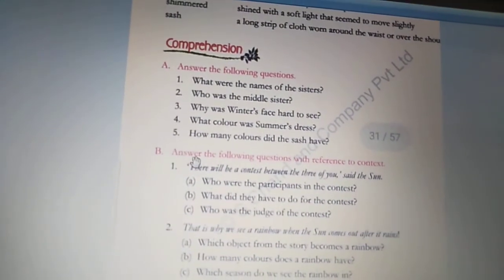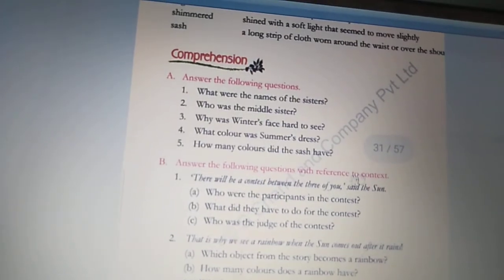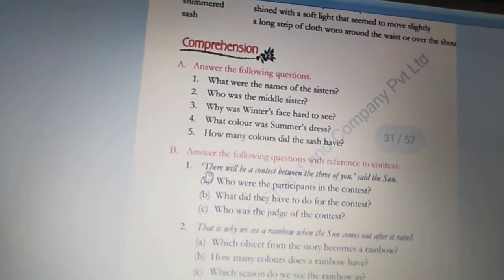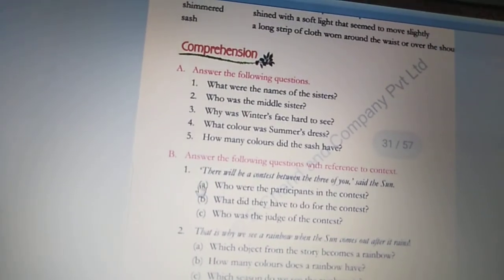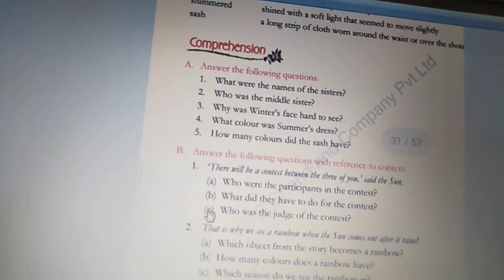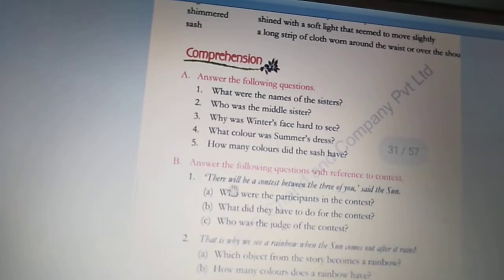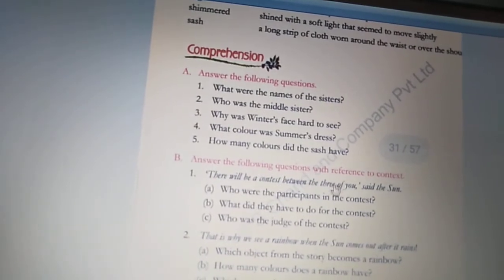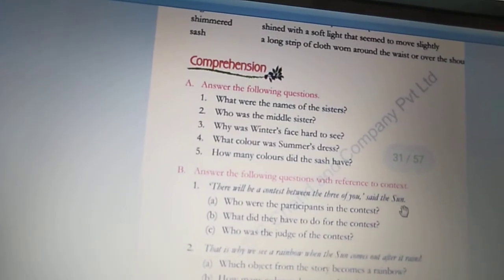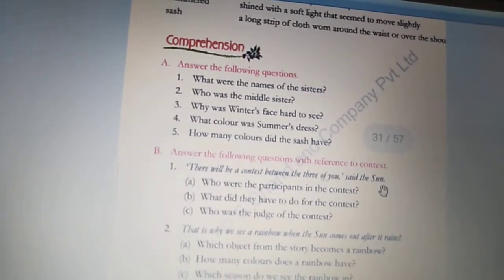Next is answer the following questions with reference to context. There is a line taken from the story and questions are being asked based upon this line. You have to answer these questions. First line is, there will be a contest between the three of you, said the sun.